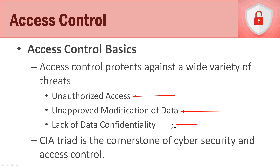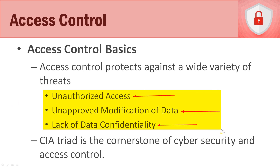Preventing unapproved modification of data gets back to integrity in our CIA triad. And then lastly, preventing a lack of data confidentiality. All three of these concepts relate back to the CIA triad. Always remember the CIA triad whenever we go through anything in this course, because everything relates back to it.